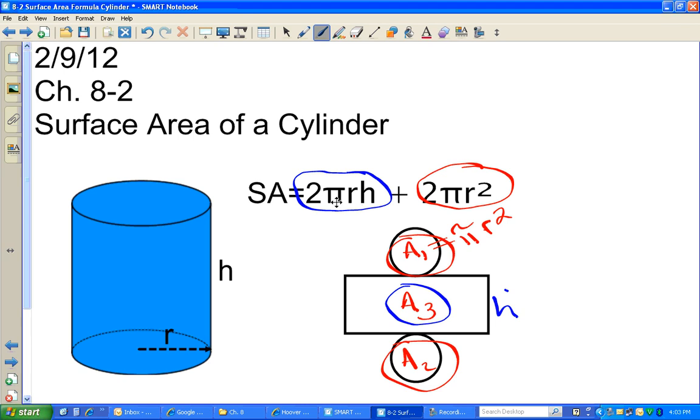You have 2 times pi times r times the height. To find the area of this, it would be this distance multiplied by the height.